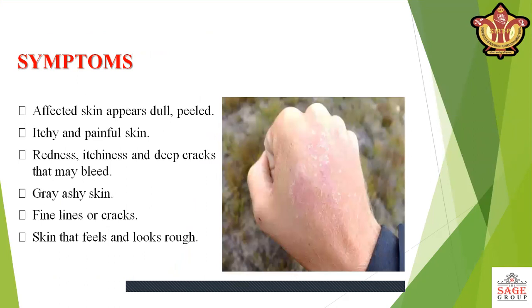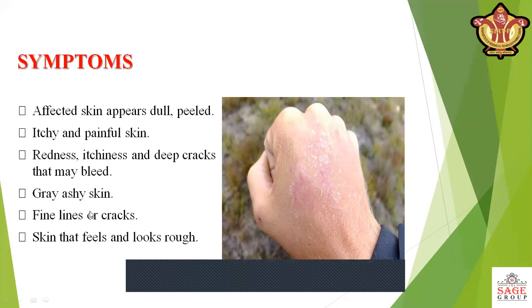The symptoms of dry skin include: affected skin appears dull, peeled, itchy, and painful; redness; itchiness and deep cracks that may bleed; gray, ashy skin; fine lines or cracks; and skin that feels and looks rough. These are the symptoms of dry skin.